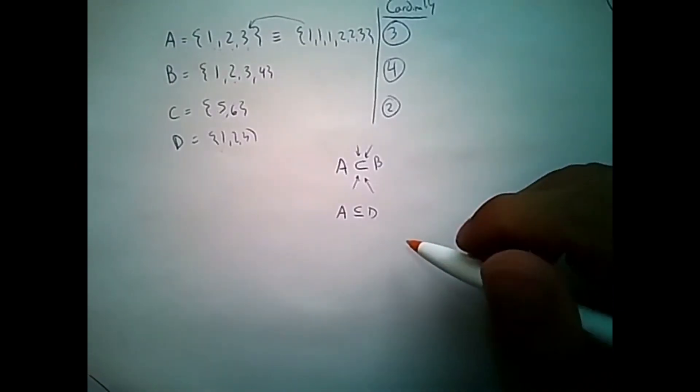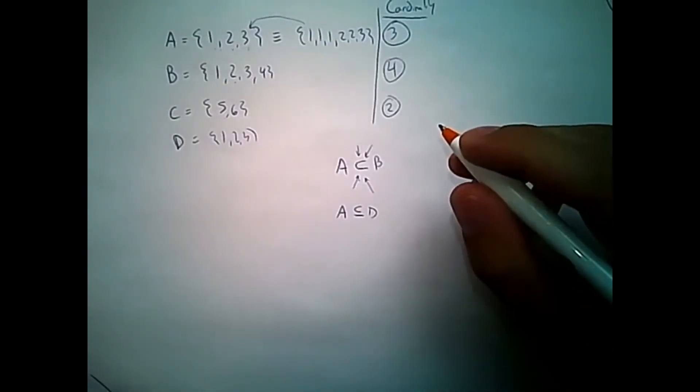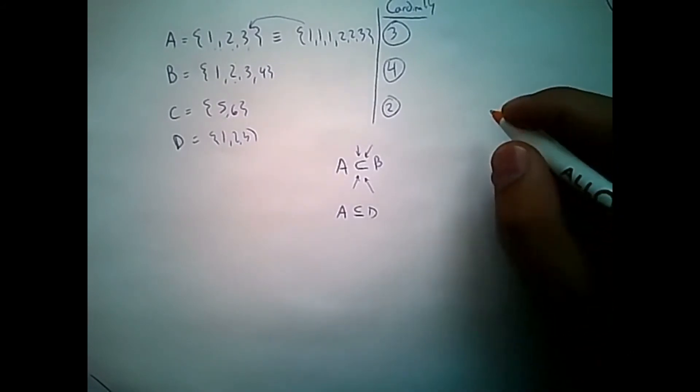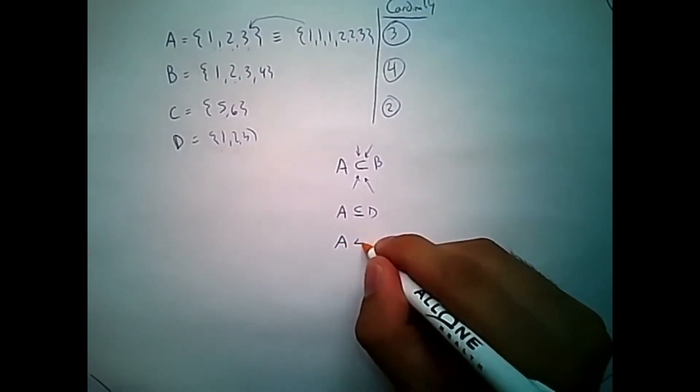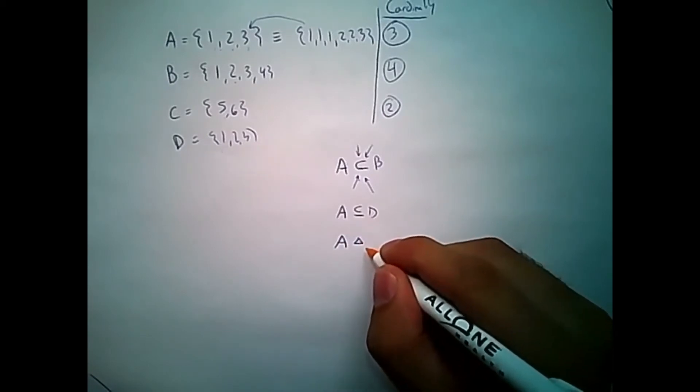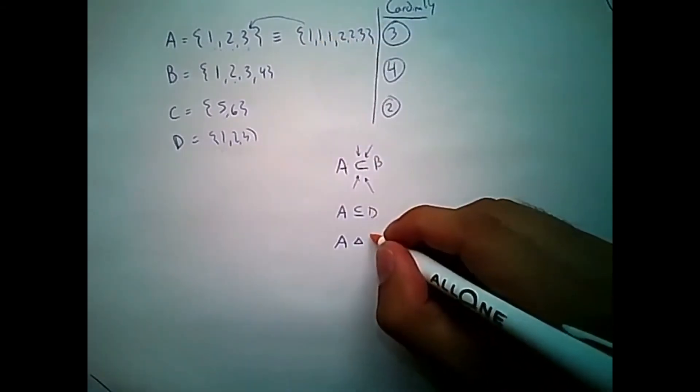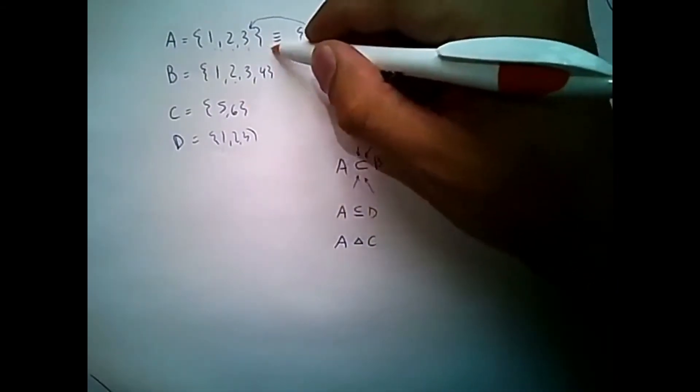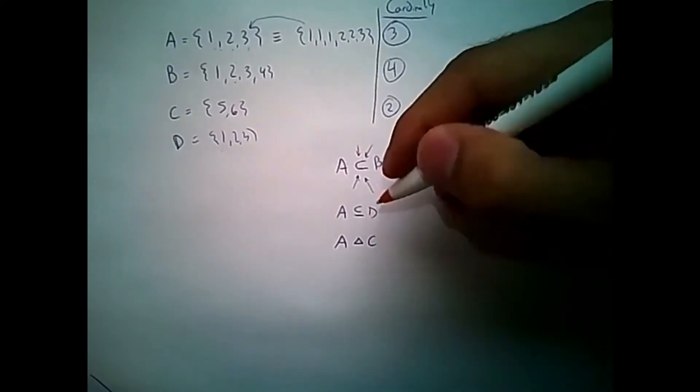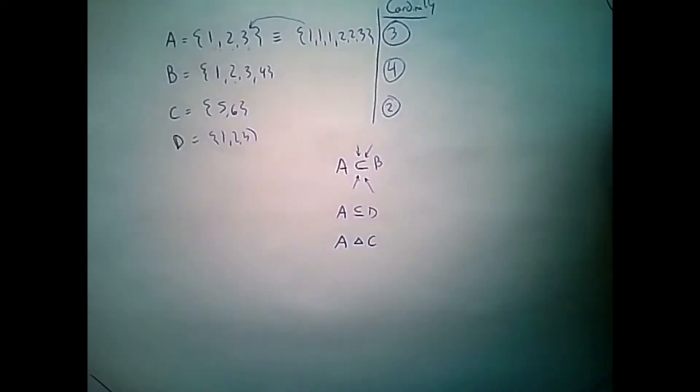Alright. Now, if these sets are disjoint, we can say that they're symmetric. And we have this symbol here, this triangle. So A would be symmetric with C, for instance. That is, they don't share any common elements with each other. Okay, so this is sort of similar to the exclusive OR gate that we've learned in regards to this symbol.